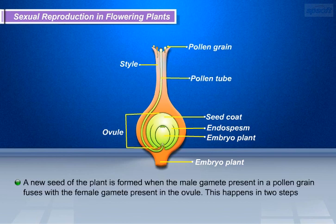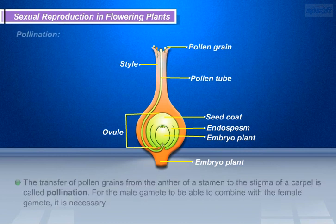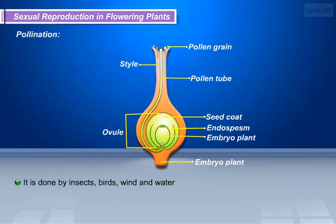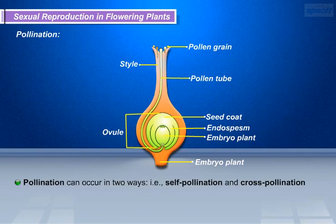A new seed of the plant is formed when the male gamete present in a pollen grain fuses with the female gamete present in the ovule. This happens in two steps: pollination and fertilization. The transfer of pollen from one flower to another, i.e. cross-pollination, is achieved by agents like wind, water, and animals. After the pollen lands on a suitable stigma, it has to reach the female germ cells which are in the ovary. For this, a tube grows out of the pollen grain and travels through the style to reach the ovary.